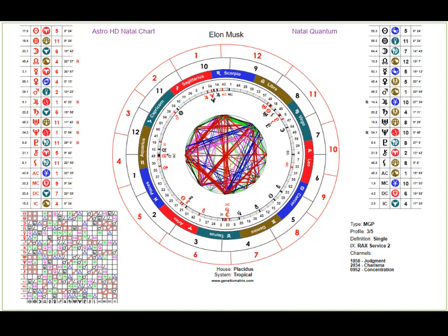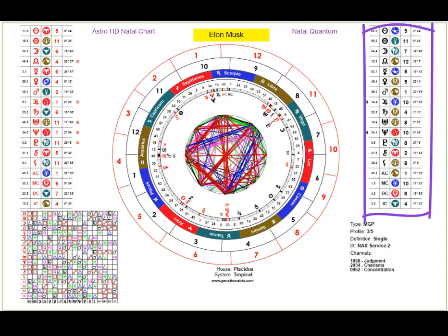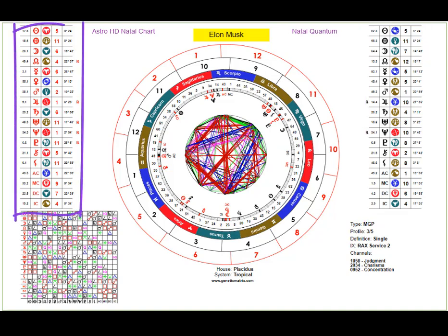Pure astrology is a personality-only calculation — it does not take into account the design calculation used in human design. This first Natal Quantum chart is a double calculation: astrology calculated twice — once for the actual birth point of this person, Elon Musk in this example, and once for the point 88 degrees of the sun before birth, which yields all of these red or design activations.